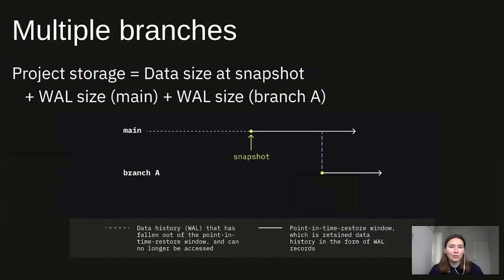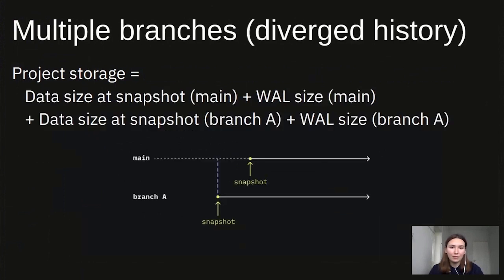When the child branch grows, its WAL is added to the project size. So the project size is calculated as data size at the snapshot moment, plus the amount of changes in both branches. But what happens when the history diverges a lot? With time, branches move forward, and the branch point of a child falls out of the parent's history window. In this case, the child's snapshot is no longer shared with the parent and is accounted separately. The project size in this case is defined as if the two branches were absolutely independent — data size at snapshot for both branches, plus WAL changes for both branches.